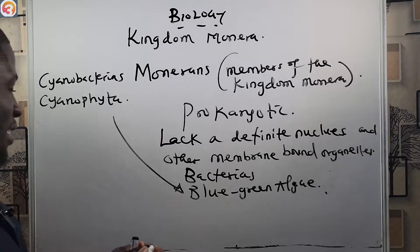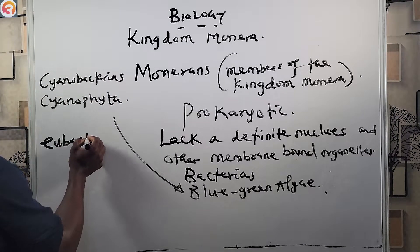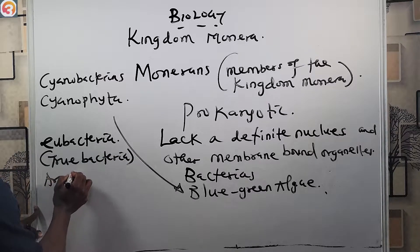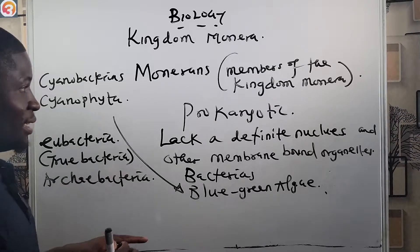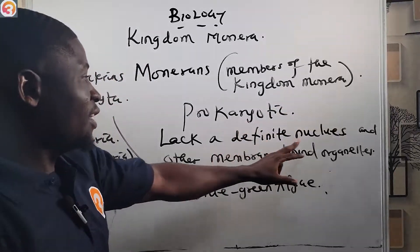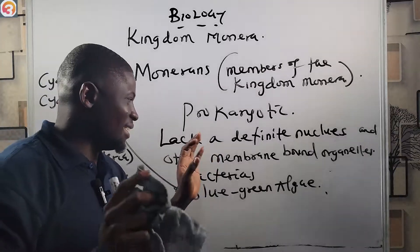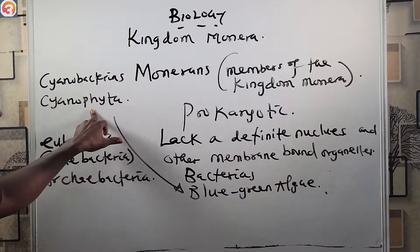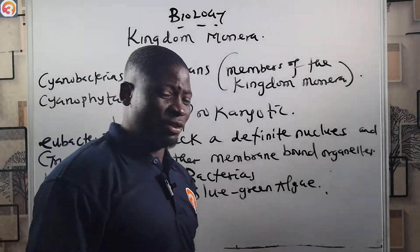The bacteria themselves are divided into two groups: eubacteria, meaning true bacteria, and archaebacteria. So the bacteria consist of eubacteria and archaebacteria. To summarize: monerans consist of bacteria and blue-green algae, with blue-green algae also called cyanobacteria or cyanophytes, and bacteria further divided into eubacteria and archaebacteria.